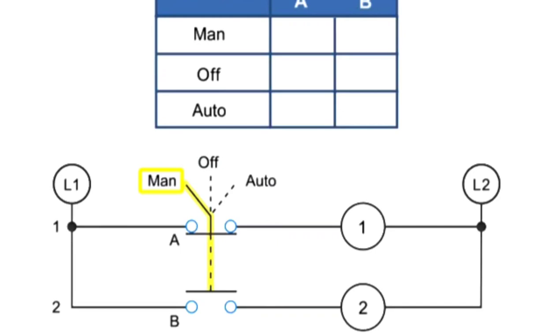Thus, in the MAN position, A is X or closed, and B is O or open. At the OFF position, both A and B are O or open. With the selector switch set to AUTO, contact A is O or open, and B is X or closed.